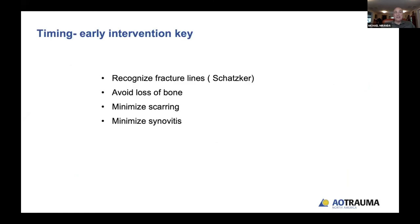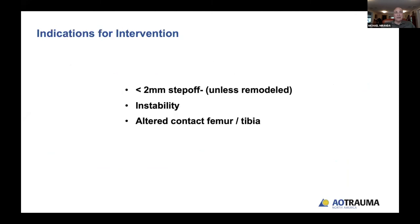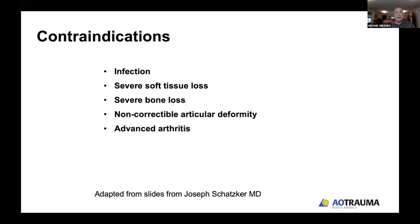You must have a number of different skill sets available. Regarding timing, you want to intervene as early as possible. Indications for intervention include less than two-millimeter step-off instability and altered contact between femur and tibia. Contraindications are infection, severe soft tissue loss, severe bone loss, non-correctable articular deformity, or advanced arthritis.